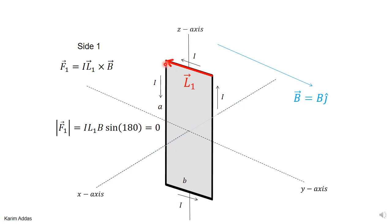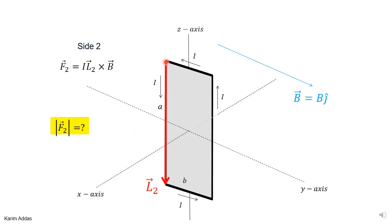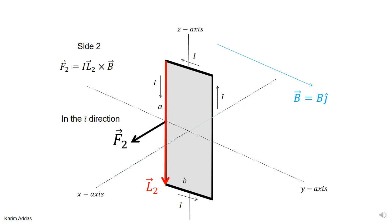The magnitude of the force on this top segment is I·L1·B·sin(180°), and since sin(180°) = 0, the force on the top side is zero. Now for the left side, L2 points from the beginning to the end of that side, in the minus Z direction. The magnitude is I·L2·B·sin(90°) = I·a·B. Applying the cross product, L2 in the minus K-hat direction crossed with B in the J-hat direction gives the I direction, so force F2 points in the plus I direction.